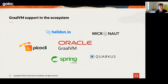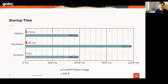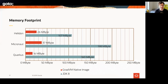GraalVM has a large and growing ecosystem of libraries that support native images, including Spring Boot, where active work is happening to support GraalVM native images. The benefits are almost universal across all supported frameworks: if it uses native image, it will start up really fast and have a much lower memory footprint than running on the JDK.